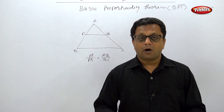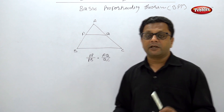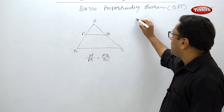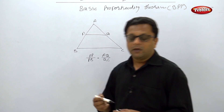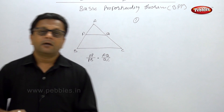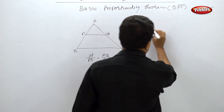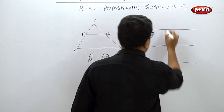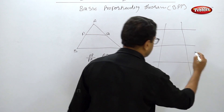Now we have to learn the applications of the Basic Proportionality Theorem. The first application is for three parallel lines. If these are three parallel lines and these are the transversals —